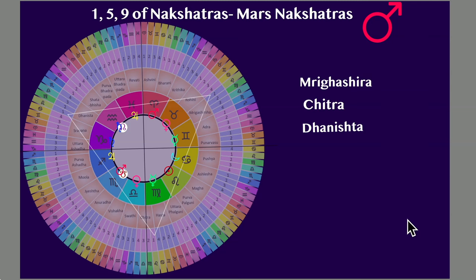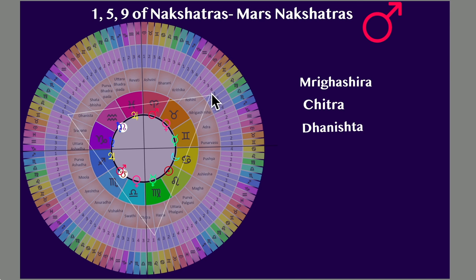Now let's get into the nakshatras. Let's talk about the one finite code of Mars nakshatras. There are three of them: Mrigashira, Chitra, and Dhanishtha — in this white triangle that has moved across the pie chart. So there you see Mrigashira, there you see Chitra, and there you see Dhanishtha. That's the apex of the triangle. If Jupiter, Ketu, or Rahu are sitting on this axis, they are looking at these three nakshatras — and if there is an exchange of lordship and the other rules I spoke of.